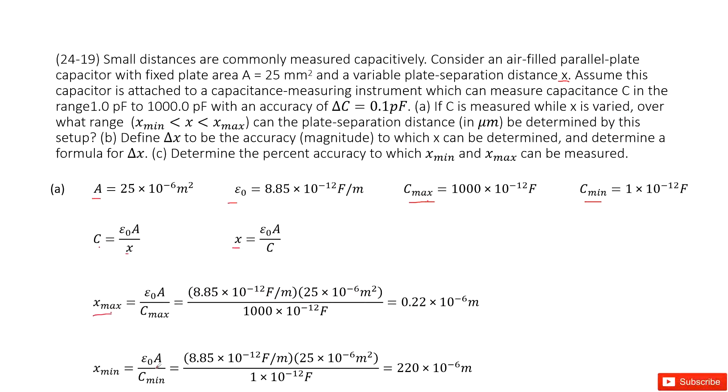Similarly, for the capacitance is minimum, we can make the gap x minimum equal to epsilon naught times A over the minimum capacitance. Input all the quantities, we get the answer there, and then part A is solved.